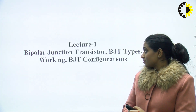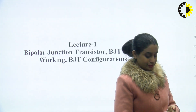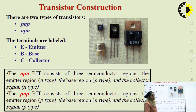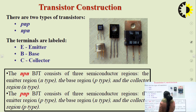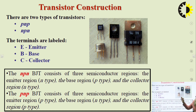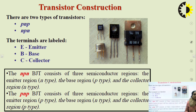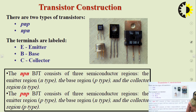Let's talk about transistor construction. There are two types of transistors: PNP and NPN. That depends on the majority of charge carriers within the transistor. The name BJT — bipolar junction transistor — is used because both majority and minority charge carriers, that is electrons and holes, contribute in the current conduction.